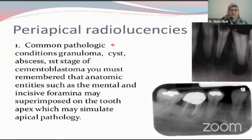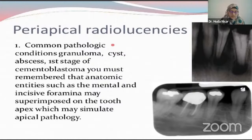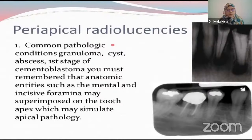Coming to periapical radiolucencies, the common pathologic conditions are granuloma, cysts, and abscess, which you will observe on a routine basis in your clinics. When going for a periapical radiograph and observing the periapical area, you have to look for anatomic structures — such as in the mandible, the mental foramen and the incisive foramen. The mental foramen could appear to you like some defect, but it is not. In the maxilla, you will find the line of Amy. Sometimes the maxillary lining is so close that you may think of it as a lesion, but it is not. You should know how to differentiate between an anatomic structure and a lesion.